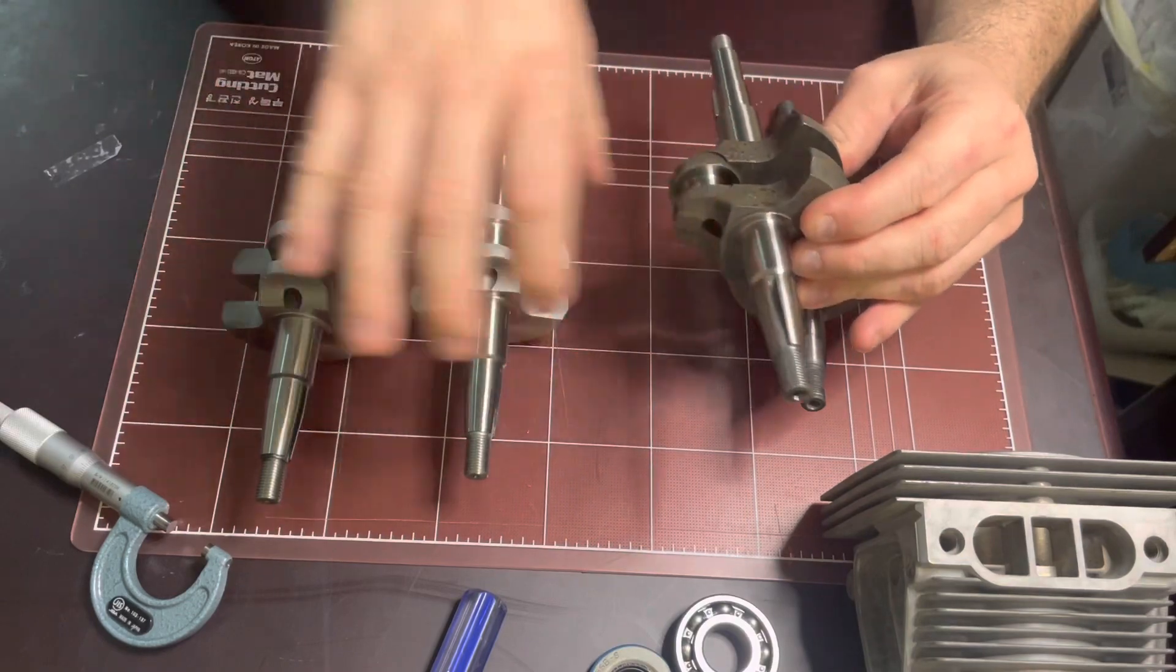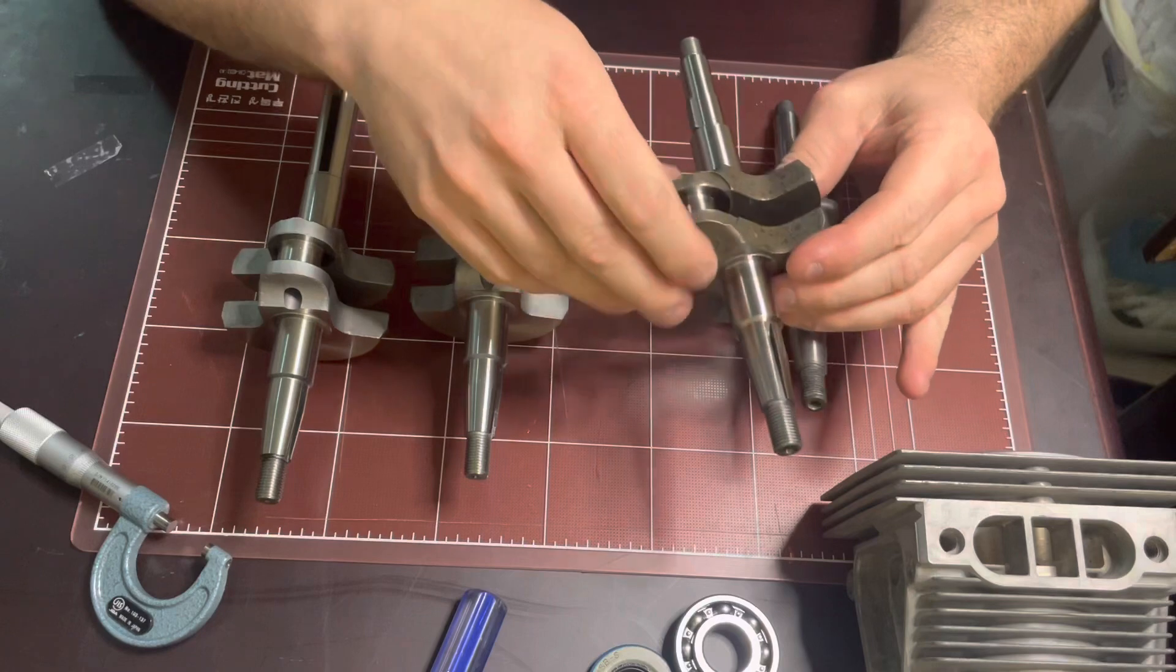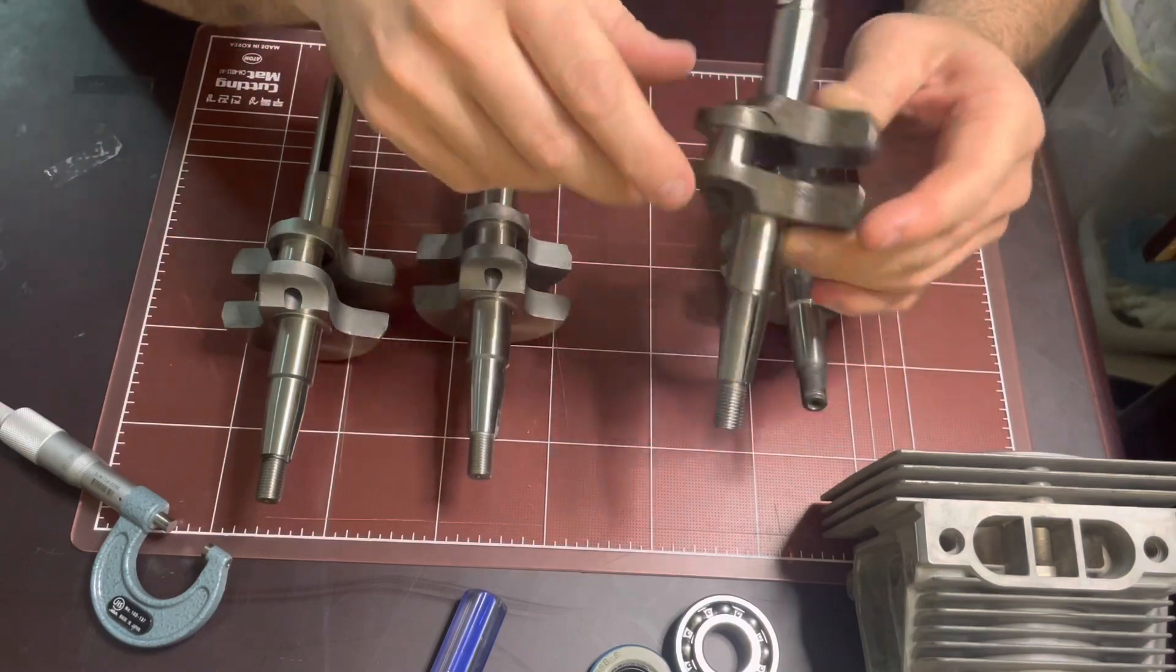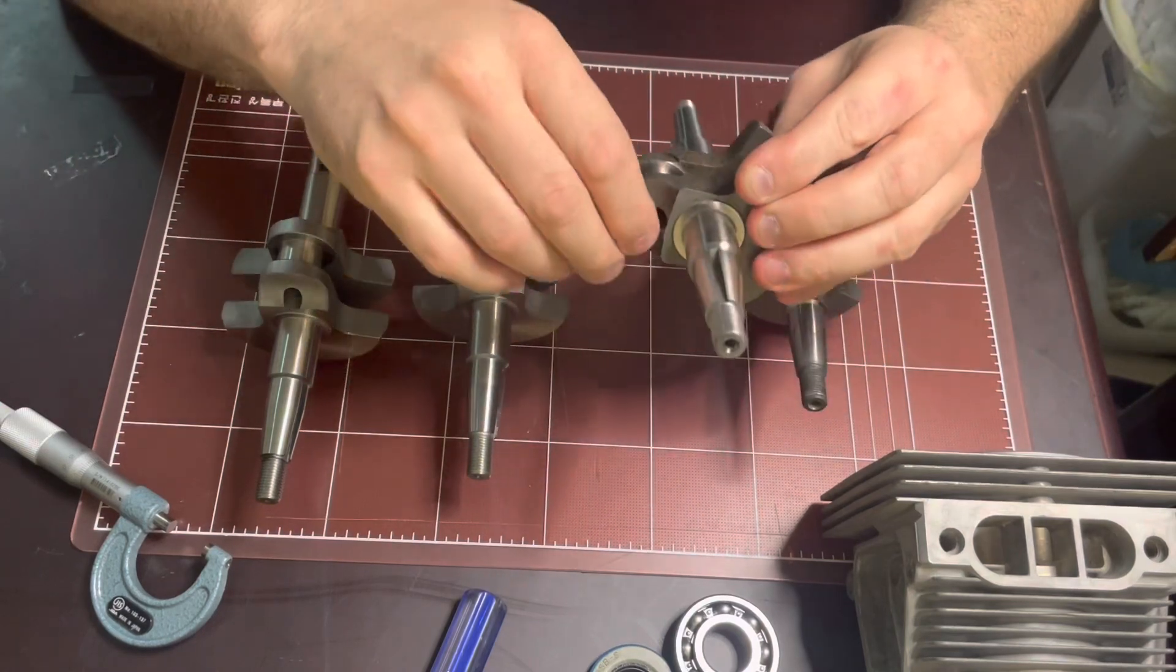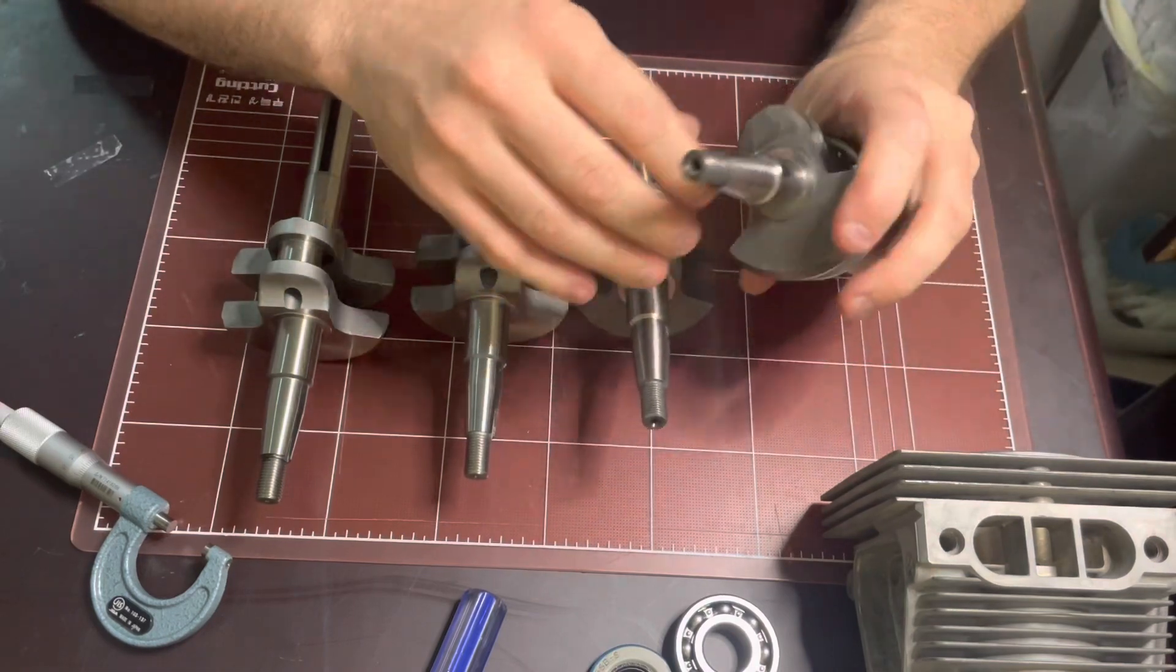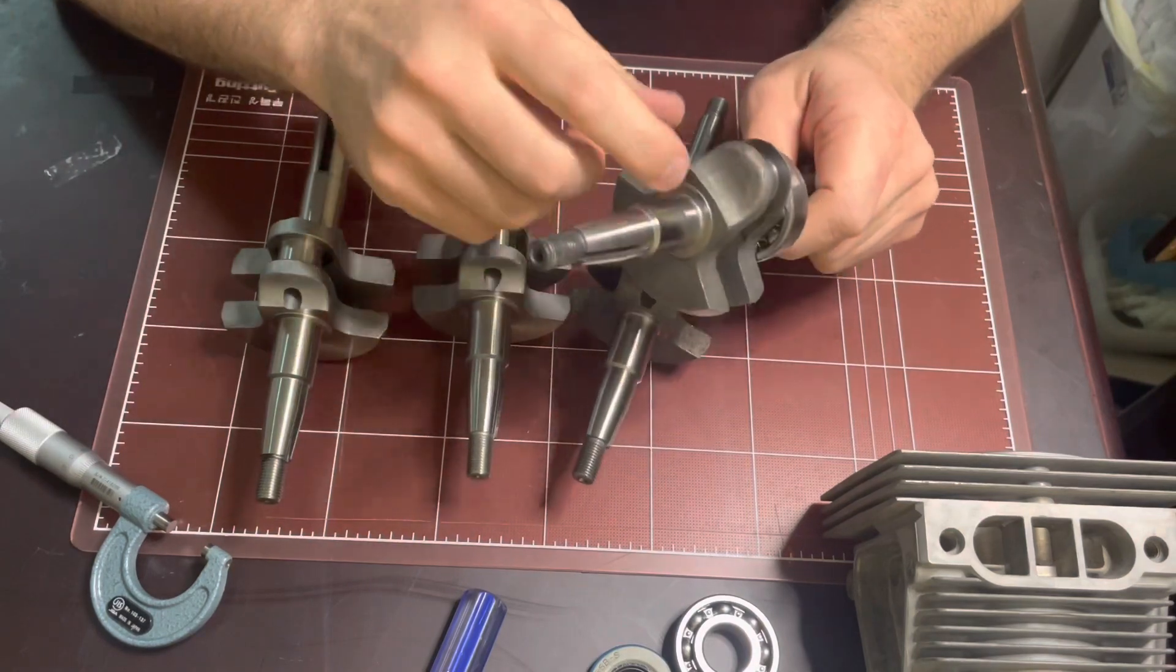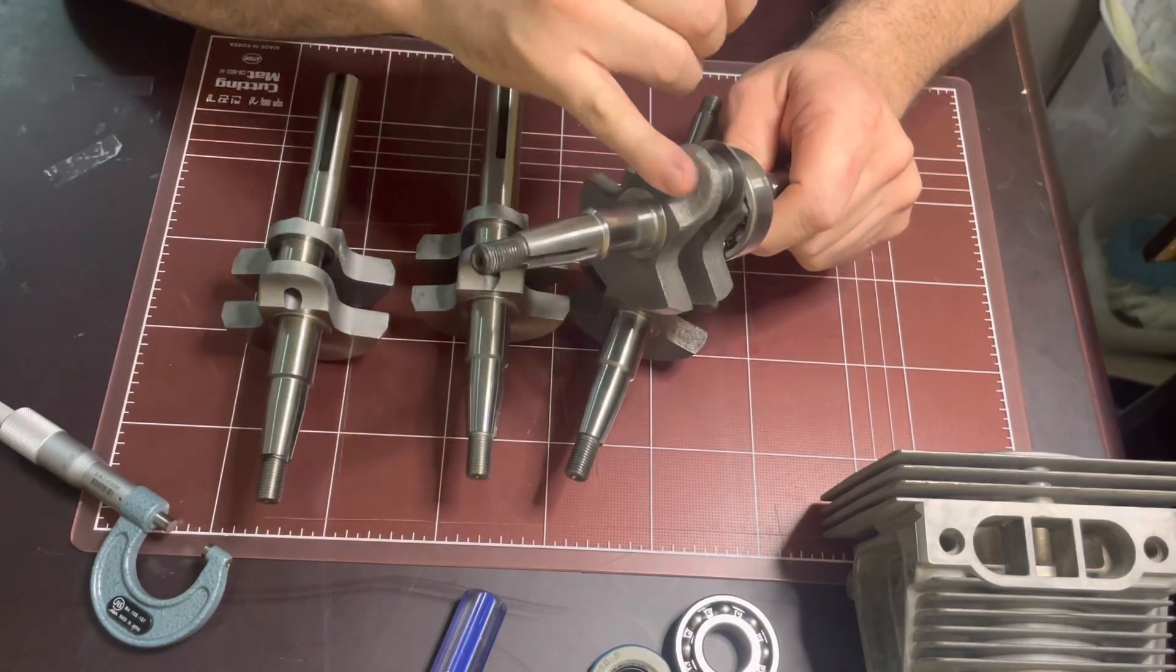So the easiest way to tell if you have either a West Bend or a Chrysler crankshaft is - do you have this hole right here? It's really important to take your micrometer and check these, especially on these old ones, just to make sure it's not worn out.